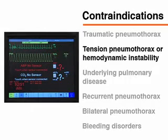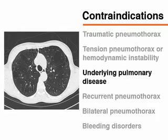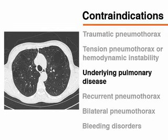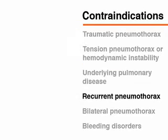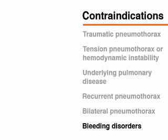Needle aspiration is contraindicated when a patient has traumatic pneumothorax or when tension pneumothorax is suspected. Hemodynamic instability also constitutes a contraindication. You should also avoid using needle aspiration in patients with underlying pulmonary disease, a history of recurrent pneumothorax, bilateral pneumothorax, or a bleeding disorder.